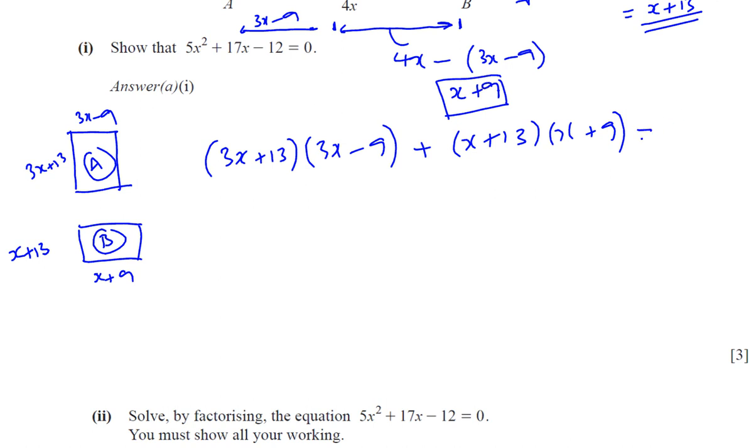Now hopefully if we expand this correctly, we're going to end up with the same expression that we see here. So you've got 3x times 3x which is 9x squared, 3x times minus 9 which is minus 27x, 13 times 3x which is plus 39x, and 13 times 9, that's going to be 27 plus 90 which should be 117 minus 117. Plus you've got x squared plus 9x plus 13x plus 117, 13 times 9, is equal to 24.